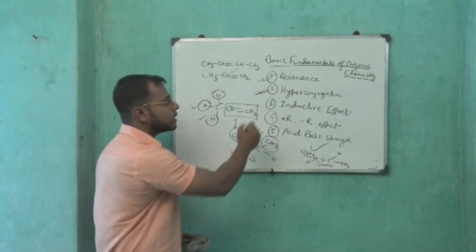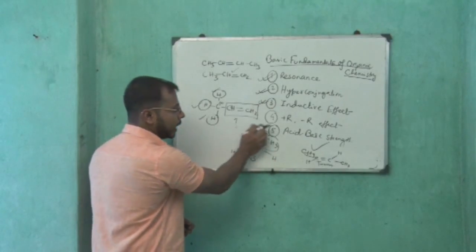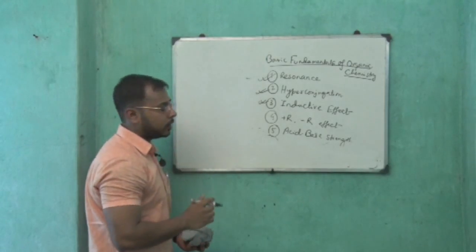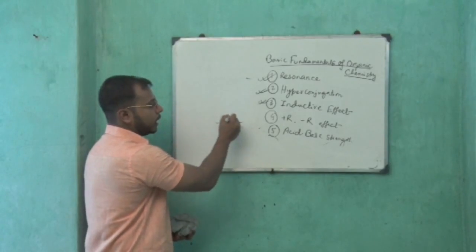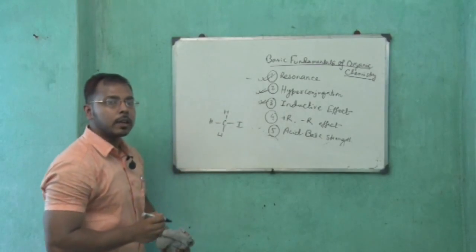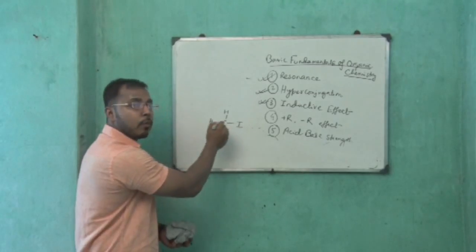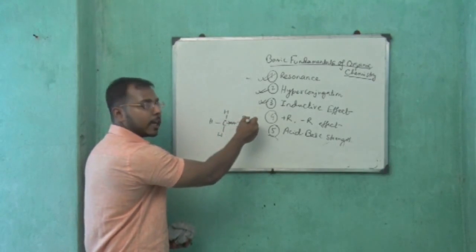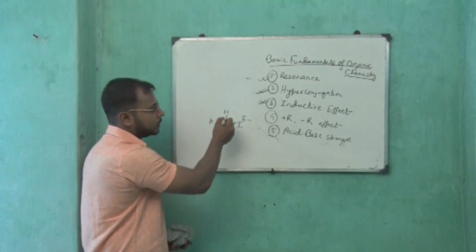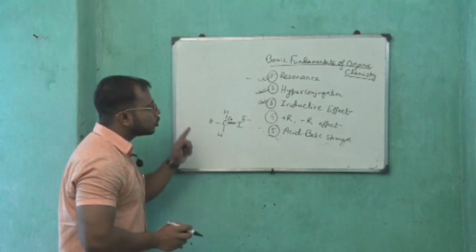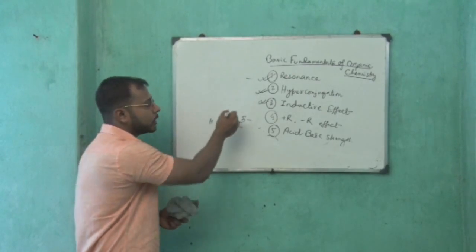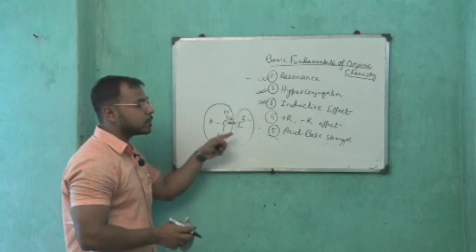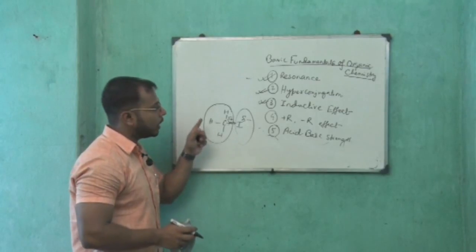Now come to the next part: inductive effect. Inductive effect can be classified as two parts: plus I effect and minus I effect. If methyl iodide is considered, iodine is more electronegative than carbon, so the bonded electrons are more attracted towards iodine. This creates a delta negative charge on iodine and a delta positive charge on carbon. This is referred to as plus I effect with respect to the methyl group, as it has an electron-pushing effect, and minus I effect with respect to the halogen, as it has electron-withdrawing power.